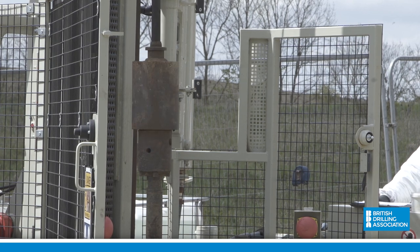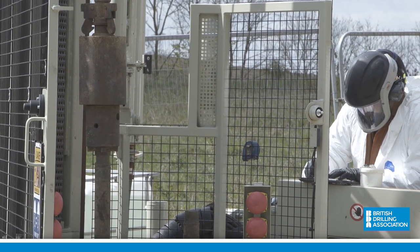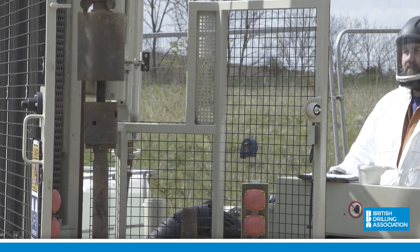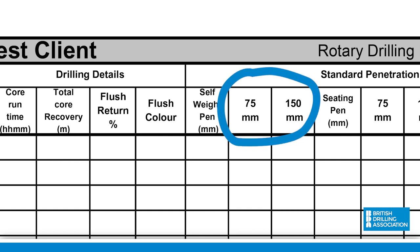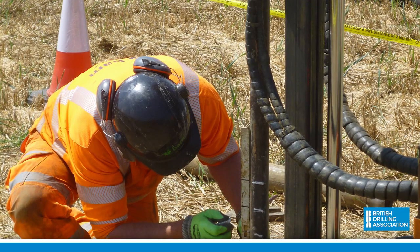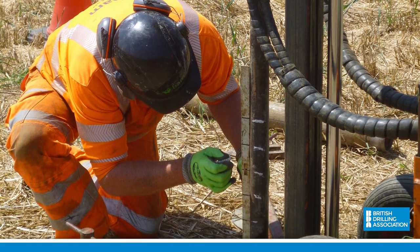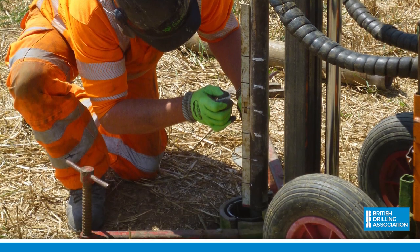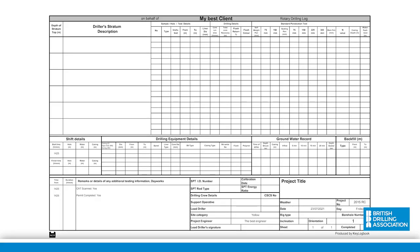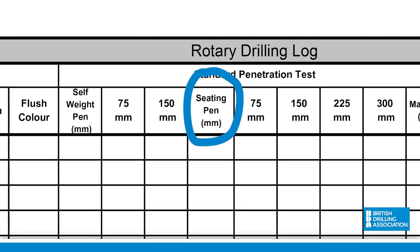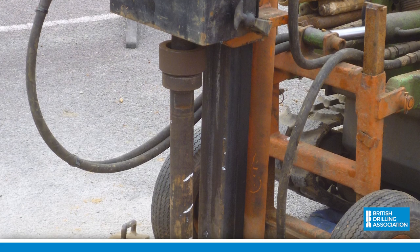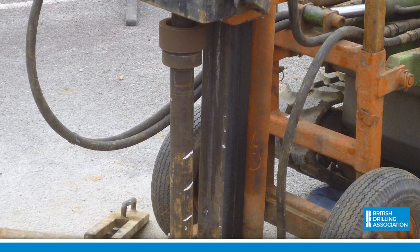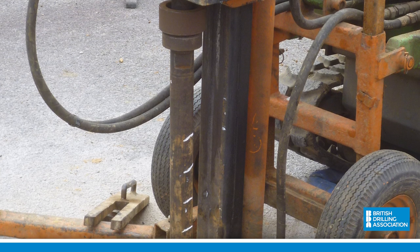Once marked up, the test is started. First, the seating drive is carried out. Record the number of blows for each of the first two 75mm increments. Refusal of the seating drive is recorded if a total of 25 blows fails to achieve the full 150mm penetration. If the seating drive meets refusal, measure and record the depth that has successfully been penetrated. If the seating drive refuses, then the rods will need to be re-marked with four 75mm main drive increments from where the seating drive stopped.